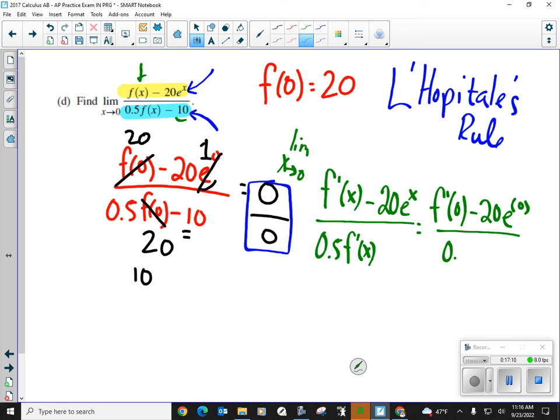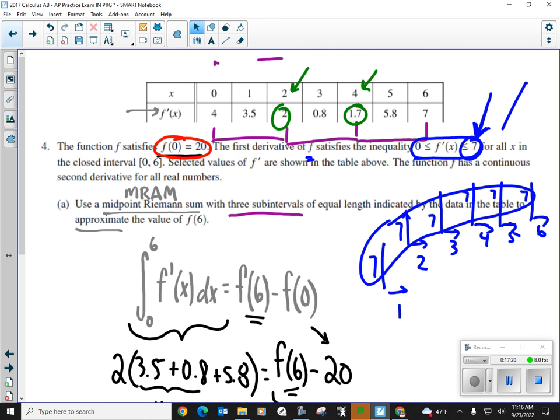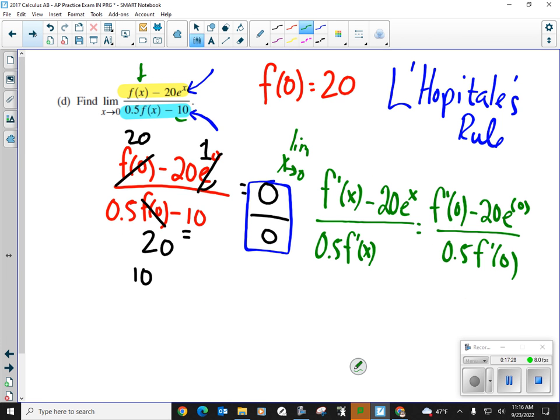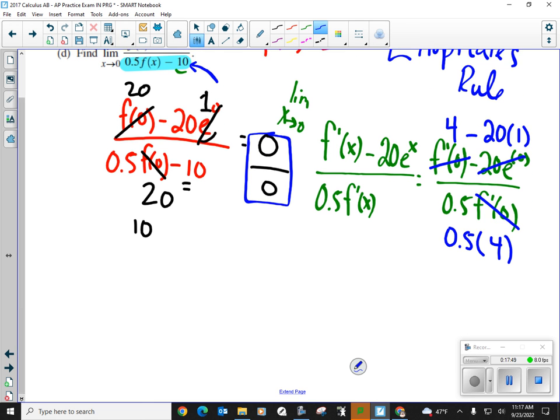f prime of 0 minus 20 e to the 0, all over 0.5 times f prime of 0. Okay, well, let's look back at our table. What is f prime of 0? When x is 0, f prime of 0 is 4. All right. It's 4. So we're going to replace this with a 4 minus 20 times anything to the power of 0 is 1. And one half times 4, because f prime of 0 is 4. Let's get a little bit more room here. 4 minus 20 is negative 16. Over half of 4 is 2. So my answer is negative 8. As long as you know L'Hôpital's rule, you are good to go.